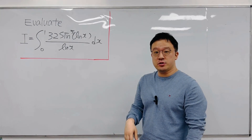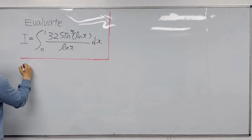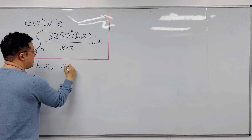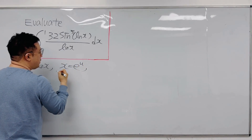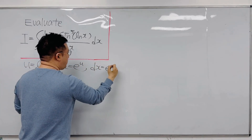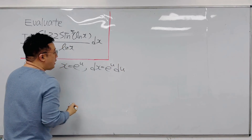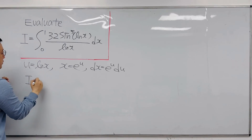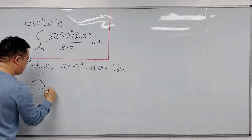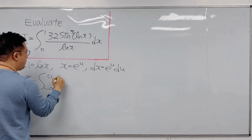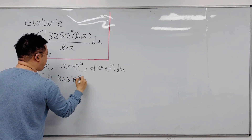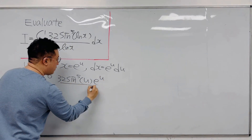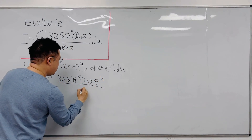I'll be using a u-substitution first. Let u = ln x. That means x is equal to e to the power of u, so dx is equal to e to the power of u du. Using this, let's rewrite this integral. So I becomes the integral from negative infinity to 0 of 32 times sine to the power of 5 of u, times e to the power of u, over u, du.